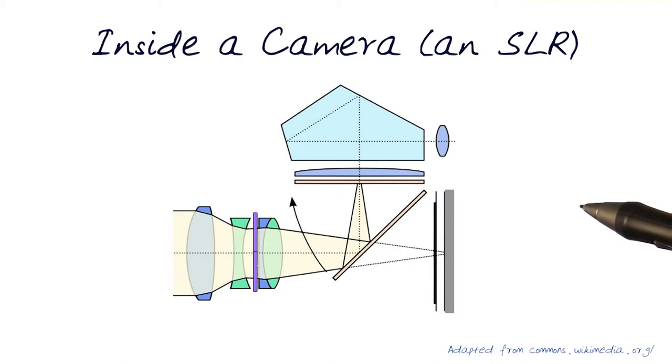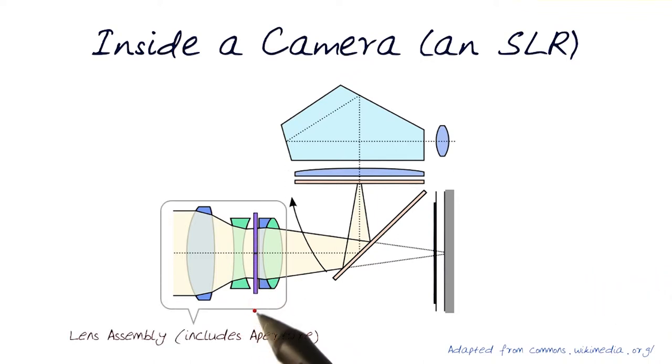Here I'm showing you another schematic of a camera. Again, in this instance, an SLR camera. This is the lens assembly. And here you notice the lens is basically a bunch of different types of lenses. It could be a mixture of concave and convex lenses with the purpose of focusing the light towards where we want the image sensor to get the best information.